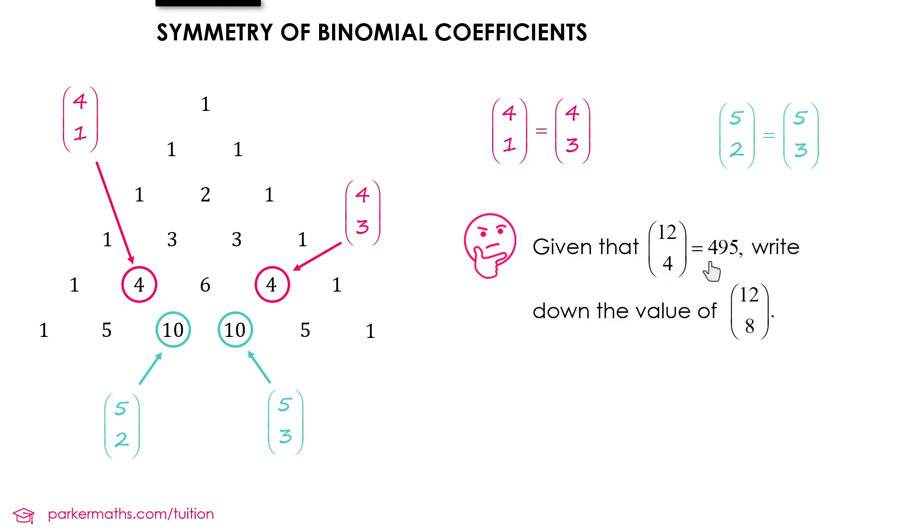Given that 12 choose 4 equals 495, write down the value of 12 choose 8. Well, since 4 plus 8 equals 12, these two binomial coefficients must be equal. And we can say that 12 choose 8 equals 495.